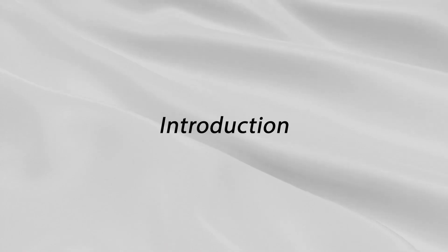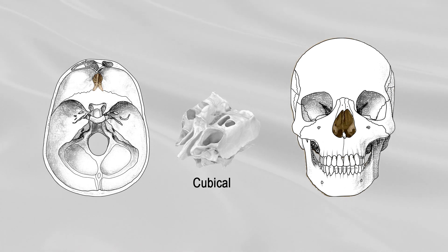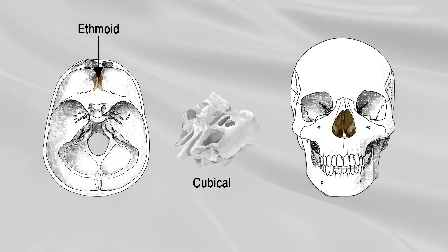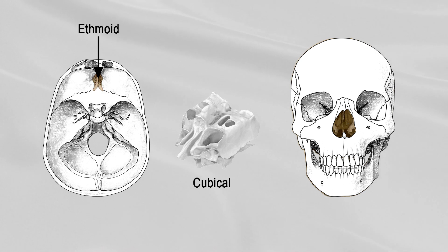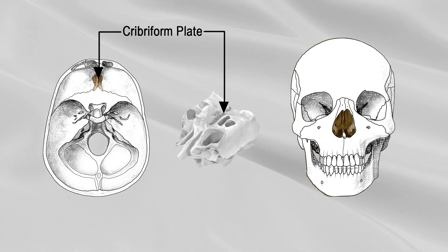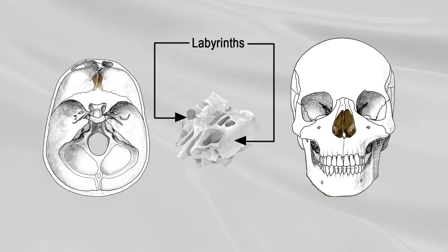Ethmoid bone. The ethmoid bone is exceedingly light and spongy and is cubical in shape. It is situated at the anterior part of the base of the cranium, between the two orbits, at the roof of the nose. It consists of four parts: a horizontal or cribriform plate, a perpendicular plate, and two lateral masses or labyrinths.